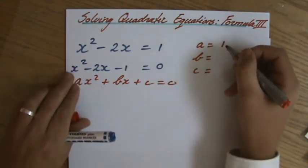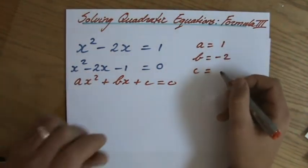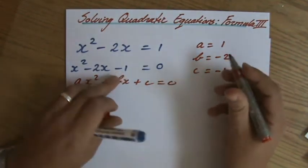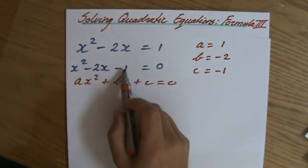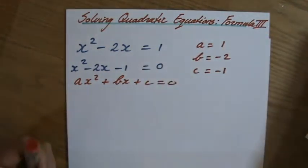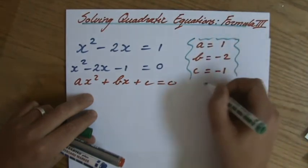a, one. b, minus two, careful in a minute. c, minus one. That's why I had to order it. c is not one, c is minus one. Okay, let me put some nice brackets there. Okay, there we go.